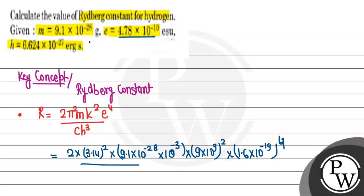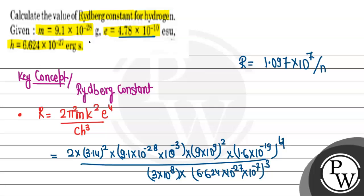...and h value is 6.624 × 10^(-27) erg·s. Multiply by 10^(-7) and take the whole cube, which becomes joules. When you solve this, the R value you get is approximately 1.097 × 10^7 per meter.